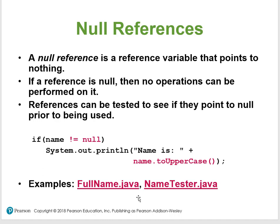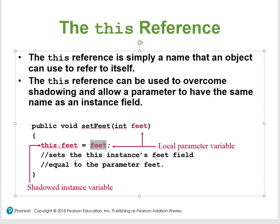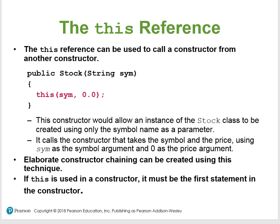The example I show here is FullName and the NameTester. The 'this' keyword is a reserved word that is simply a name that allows an object to refer to itself. For example, if you want to set a field where the local parameter has the same name as the instance field, 'this' can be used to overcome shadowing — so 'this.feet = feet' sets the instance field equal to the parameter.